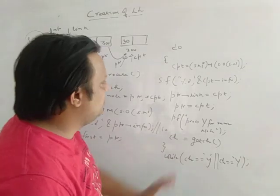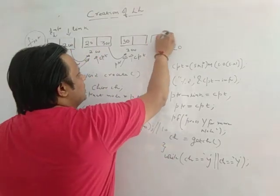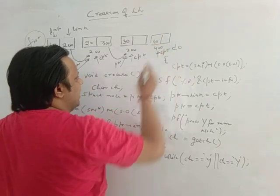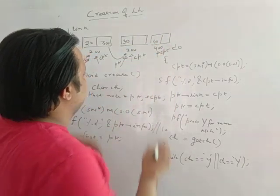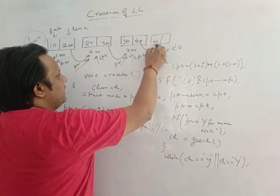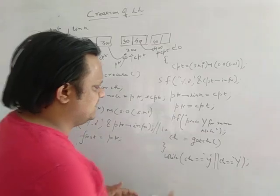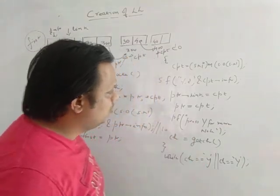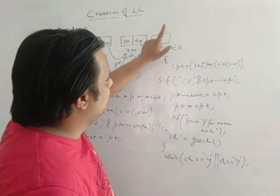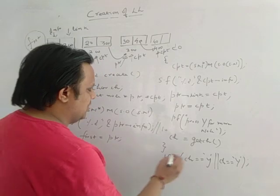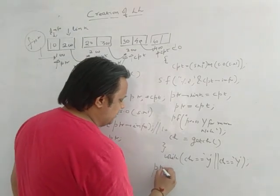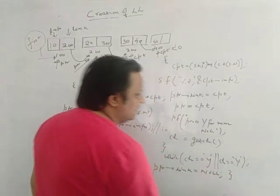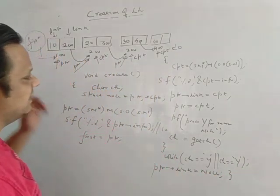Suppose the user presses y again — a new node is created with info 40, this becomes cpt. ptr->link = cpt inserts address 400 and that node gets connected. Now suppose the user presses n — the value of ch becomes n, the condition becomes false, and we exit the loop. Once out of the loop, this is the last node, so its link part should be NULL: ptr->link = NULL. This creates your single linked list.